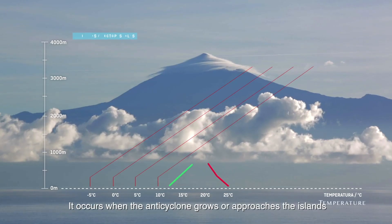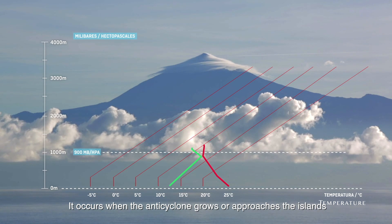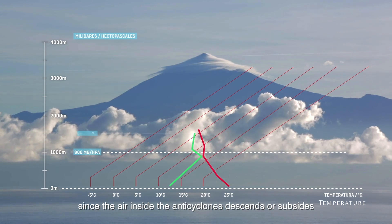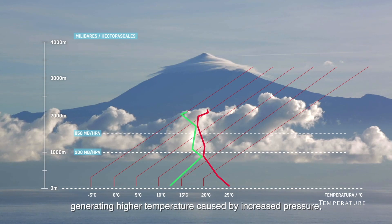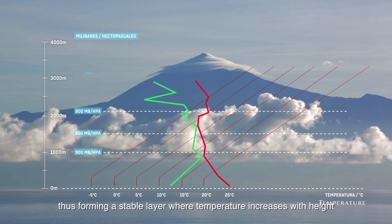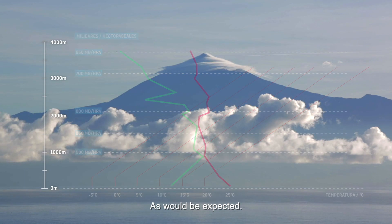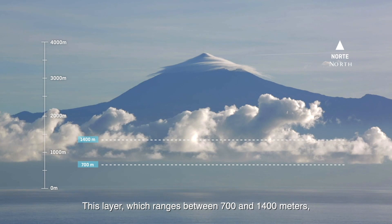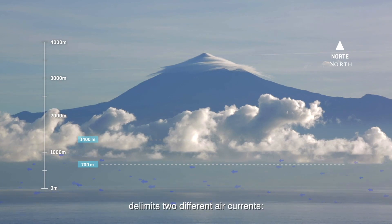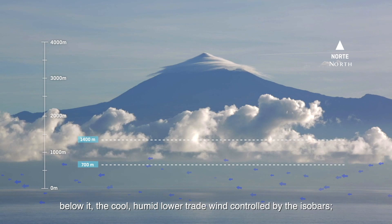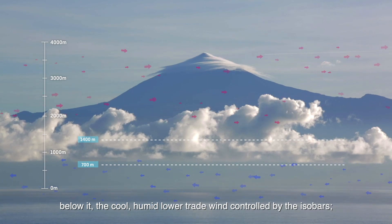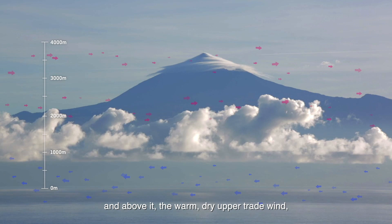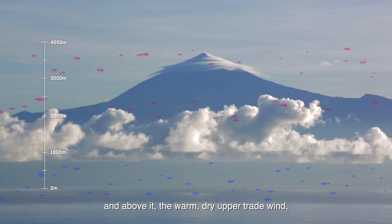This sea of clouds occurs when the anticyclone grows or approaches the island. Since the air inside the anticyclones descends or subsides, it generates higher temperatures caused by increased pressure, forming a stable layer where temperature increases with height instead of decreasing as would be expected. This inversion layer, which ranges between 700 and 1400 meters, delimits two different air currents: below it the cool, humid lower trade wind controlled by the isobars, and above it the warm, dry upper trade wind.